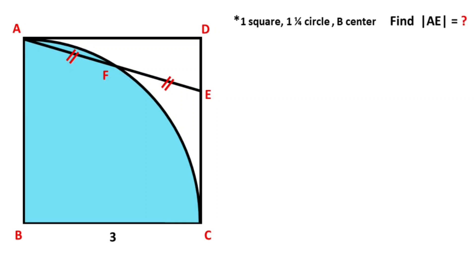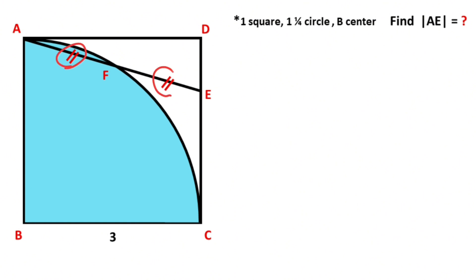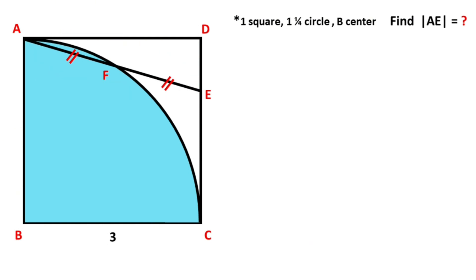In this video we have one square, one quarter circle, and one side of the square is given as three units. These two parts are given as equal. The question is: what is the length of AE?